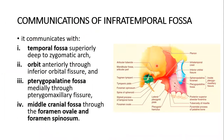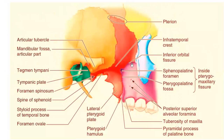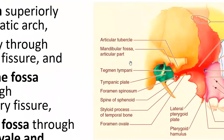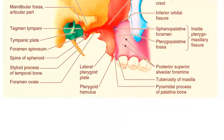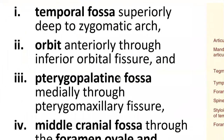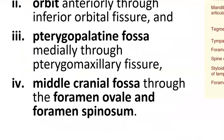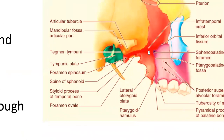The infratemporal fossa communicates with the temporal fossa deep to the zygomatic arch. It communicates anteriorly with the orbit through the inferior orbital fissure. It communicates medially with the pterygopalatine fossa through the pterygomaxillary fissure. It also communicates with the middle cranial fossa through the foramen ovale and foramen spinosum, which are present in the sphenoid bone in the roof.